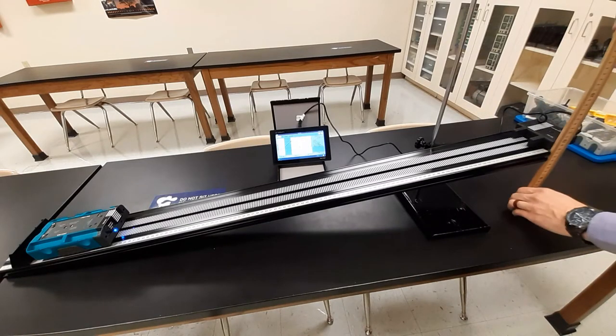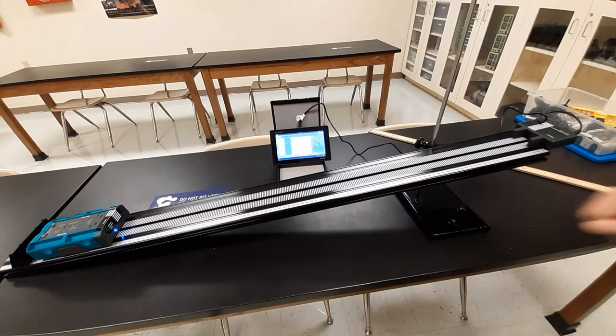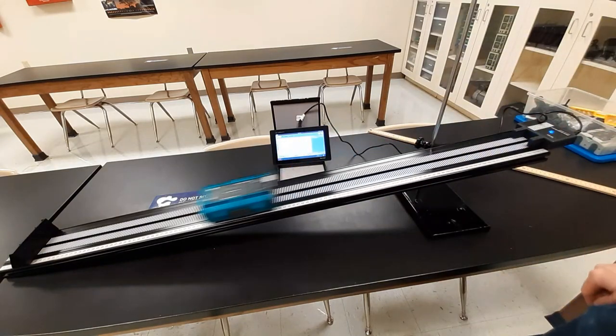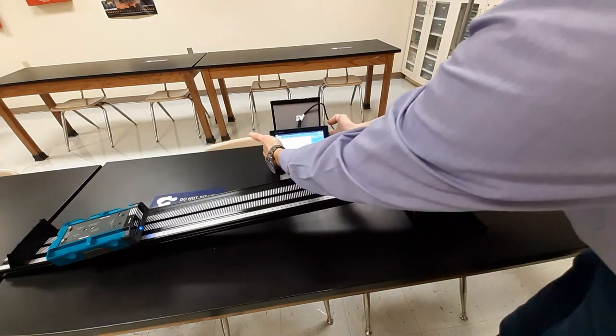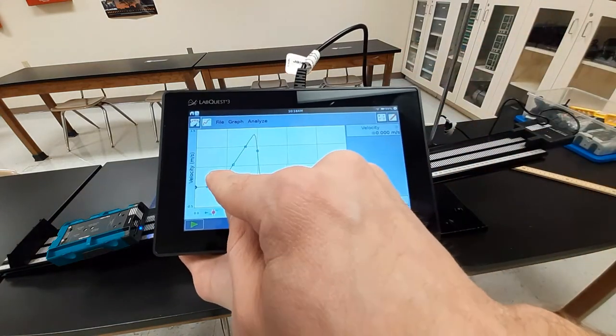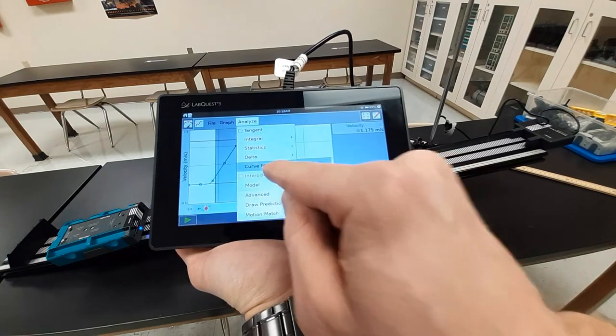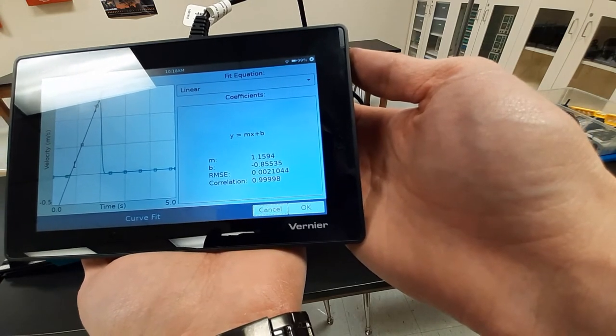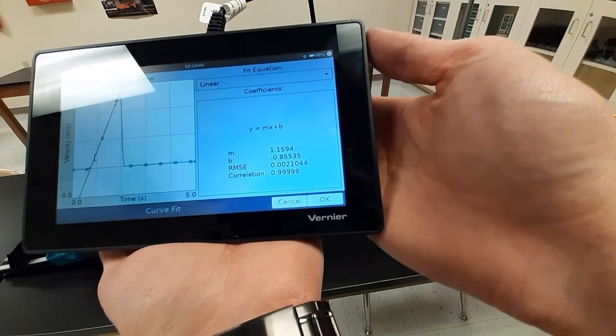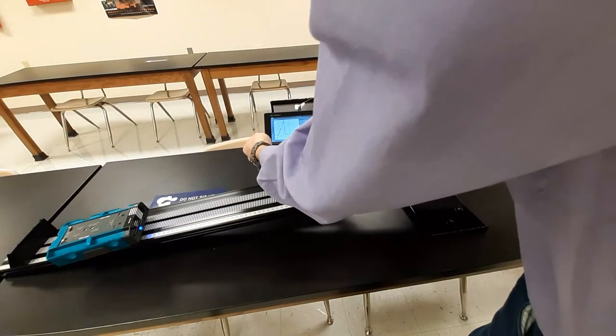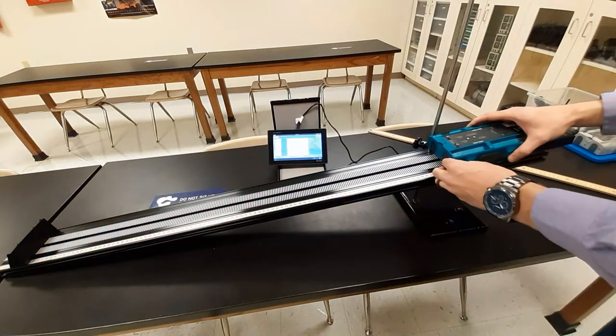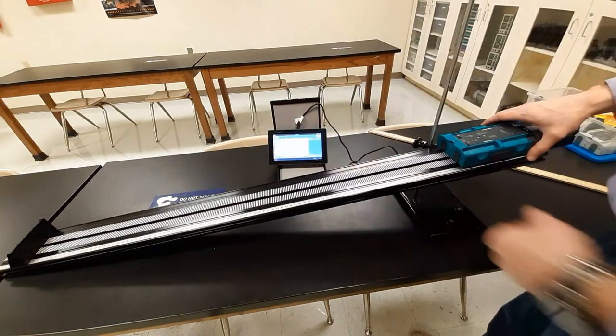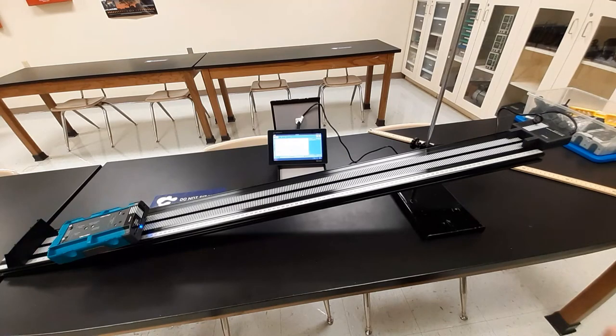Now we're on our third height. This time I set us up at 15.0 centimeters. So we'll bring our car to the top of the ramp, start collection, let it go, crashes. And again, we want to look at this slope, analyze, curve fit, velocity. This time slope is 1.1594. So you notice that same pattern. Our ramp's a little bit higher. Our slope's a little bit steeper. So our acceleration increased again. So this is trial two at 15 centimeters. Get started. Let it crash. Slams to a stop.